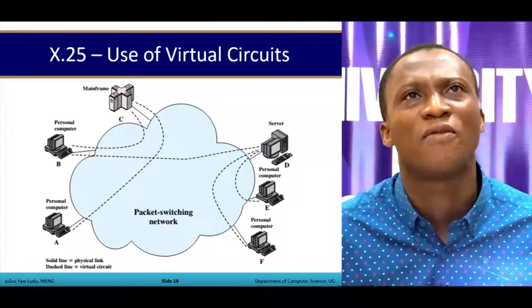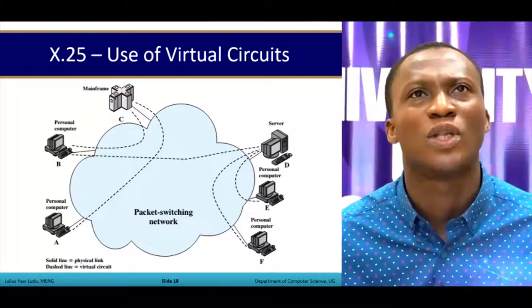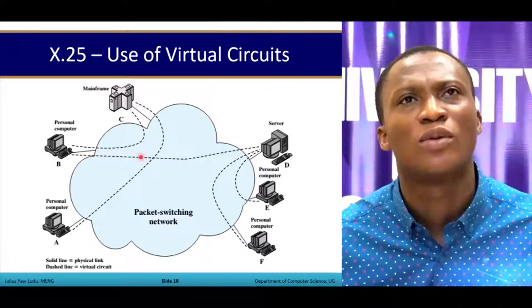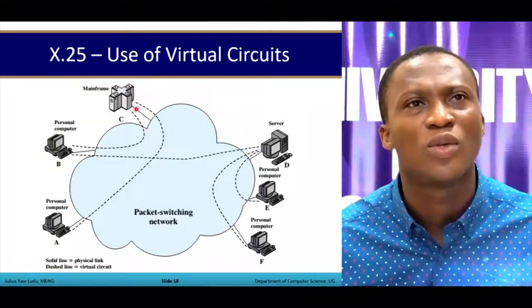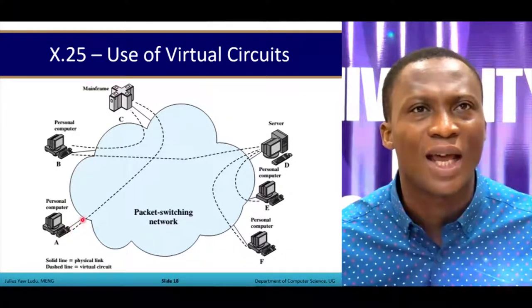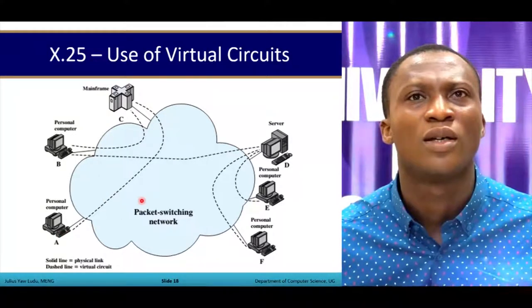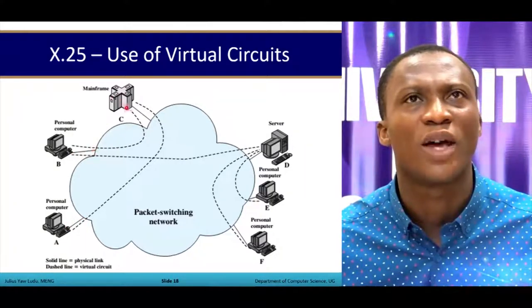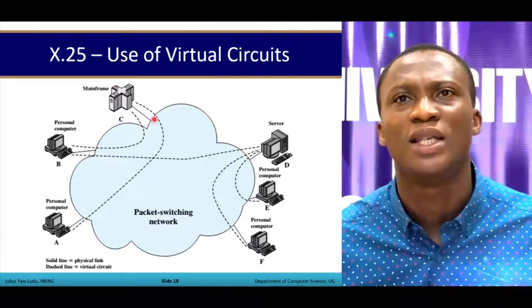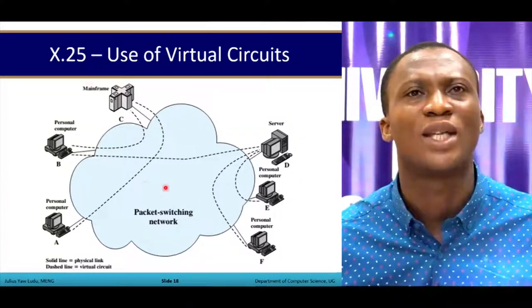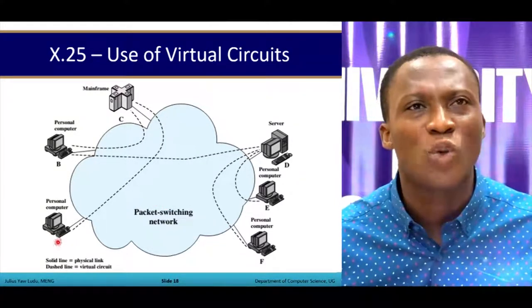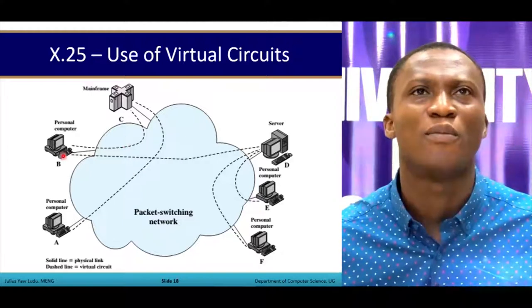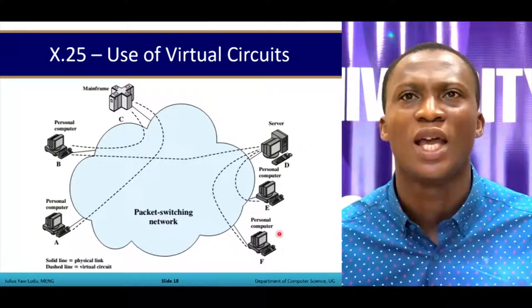In an X.25 example using virtual circuits, the short dashes represent the virtual circuit connections — for instance, from A to C and from B to C, B to D, F to D, and E to D. There are also dedicated physical links from each station — A, B, C, D, E, F — to the packet switching network, while the virtual links connect through to the mainframe.